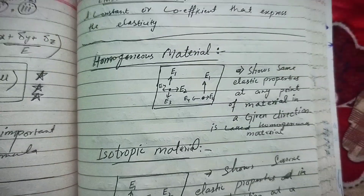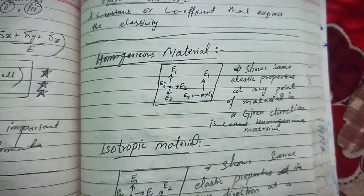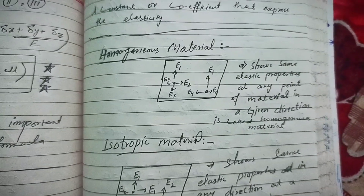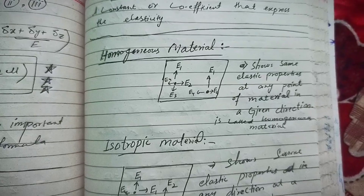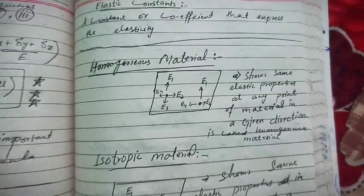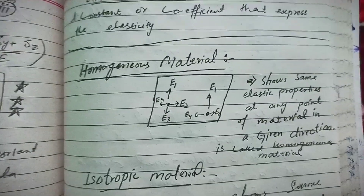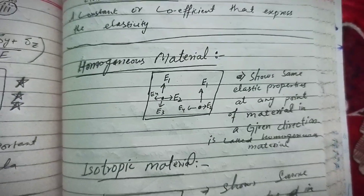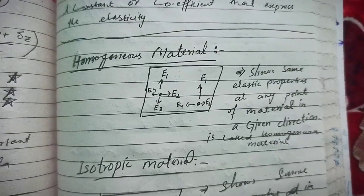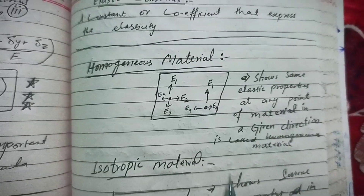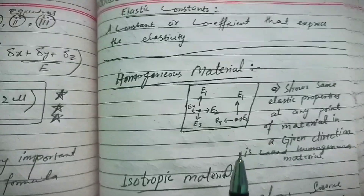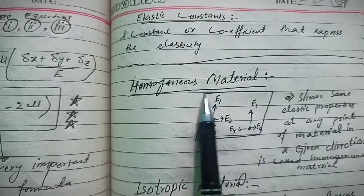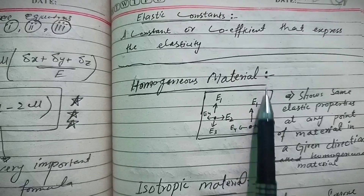Hello guys, in today's video we will talk about homogeneous material and isotropic material. First of all, we will talk about homogeneous material — you can see that this is a material.